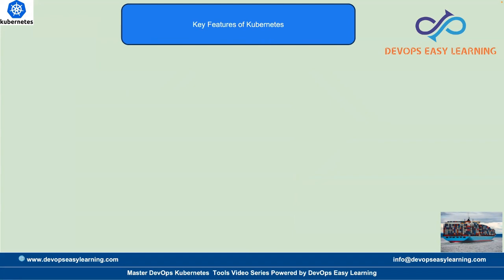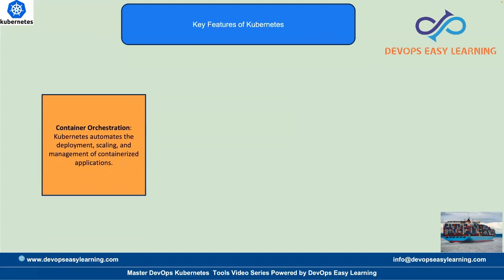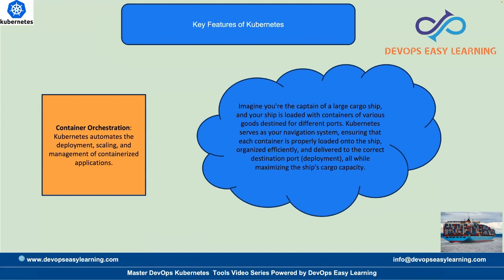Kubernetes has a couple of features. The first one is called container orchestration. Kubernetes actually automates the deployment, scaling, and management of containerized applications. To put this in context with our shipping goods example: imagine you are the captain of a large cargo ship, and your ship is loaded with containers of various goods destined to different ports. Kubernetes serves as your navigation system, ensuring that each container is properly loaded, organized, and efficiently delivered.